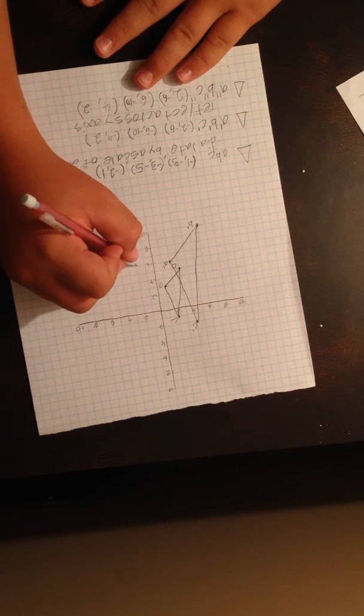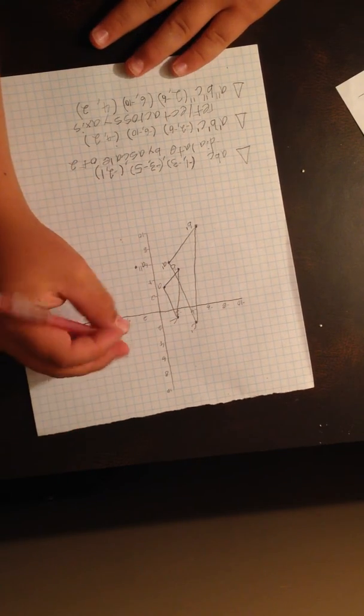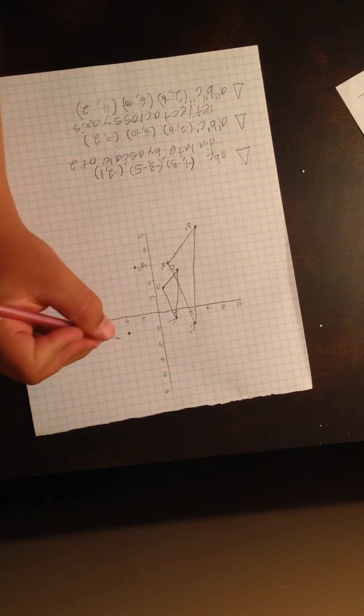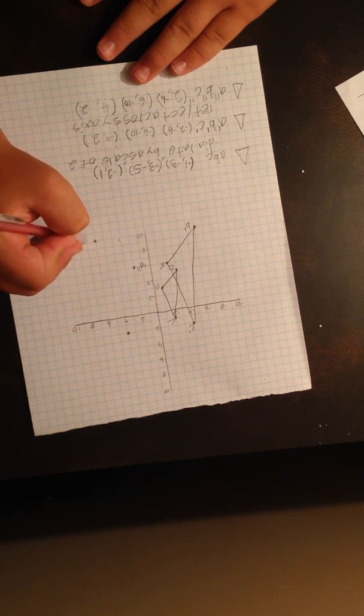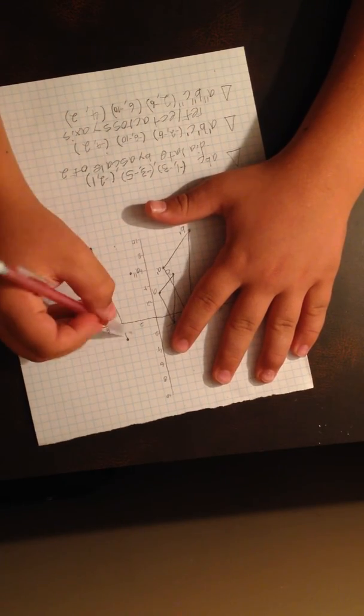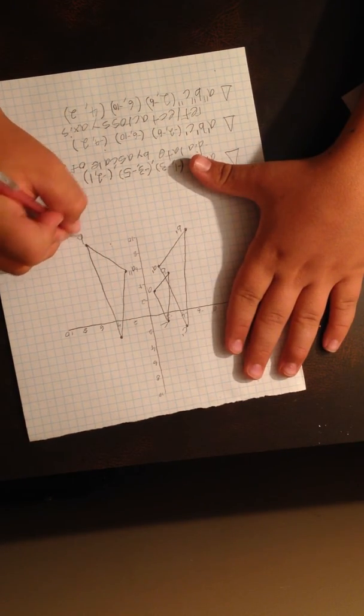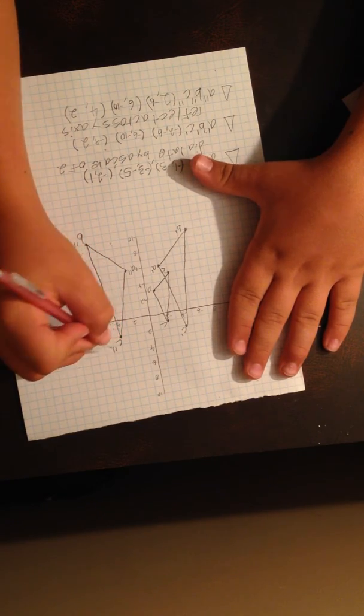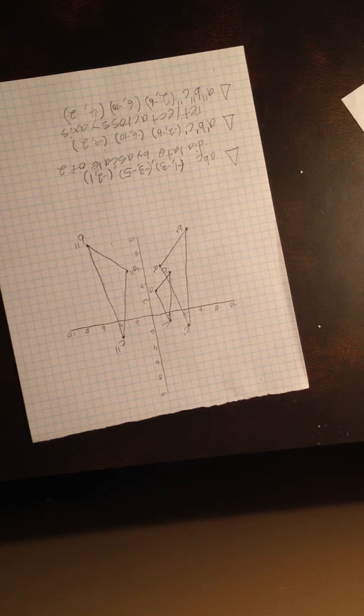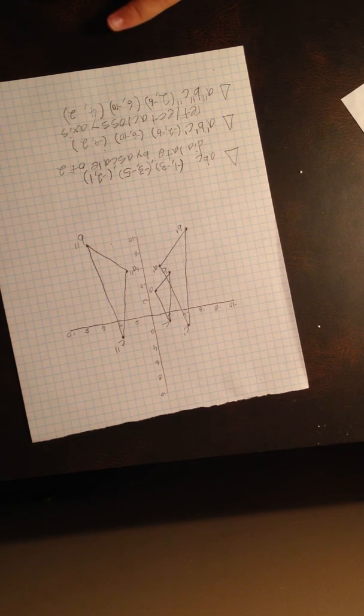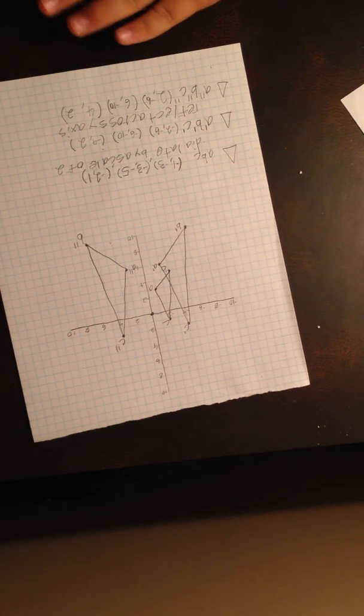So let's go ahead and mark that. Oh, and Mr. Bledsoe, I forgot to say, when I did the scale factor of 2, I dilated it. The point I dilated it by was the origin. So, that's it.